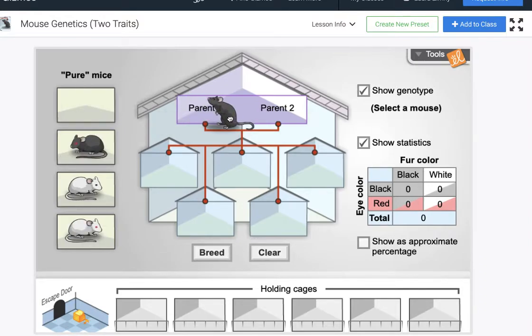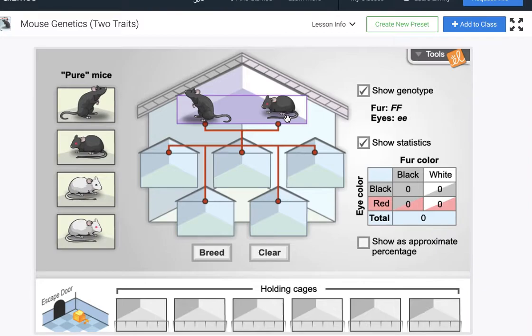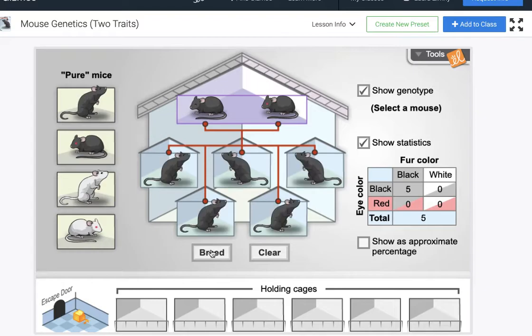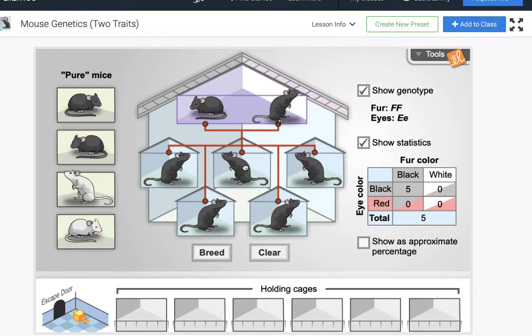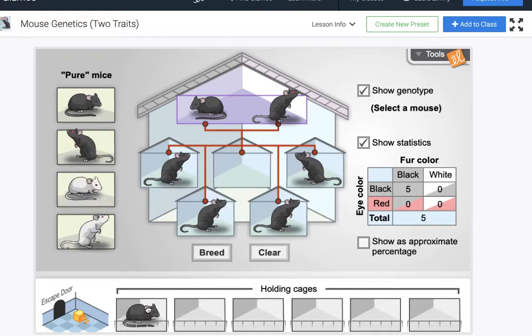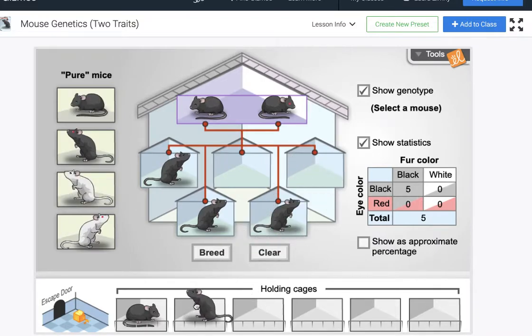All right we're gonna clear that out and set up a new problem. So let's say we take a parent who is homozygous dominant and we pair that with something that has homozygous dominant traits for fur color but recessive traits for eye color. We're gonna breed that individual. Now let's take a mouse from this that is homozygous dominant for the fur color but is heterozygous for that eye color.